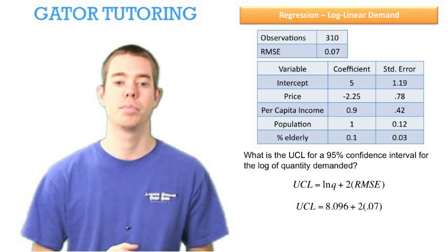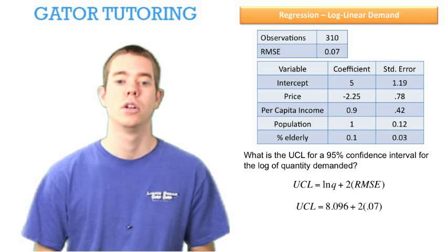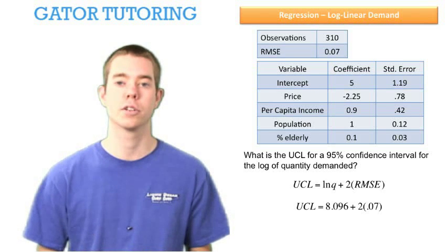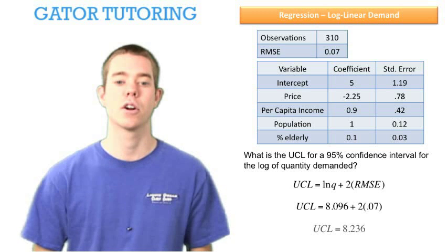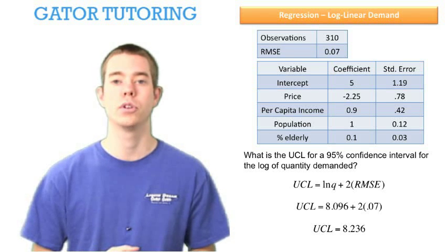So we can plug in our components: 8.096 is the log of quantity demanded, 2 times our root mean squared error is 0.07, and we see that our upper control limit equals 8.236.